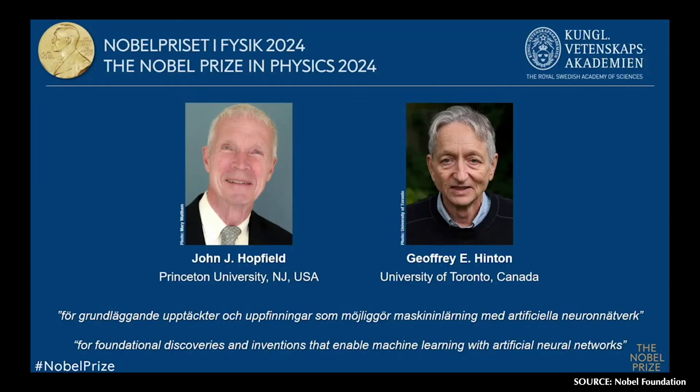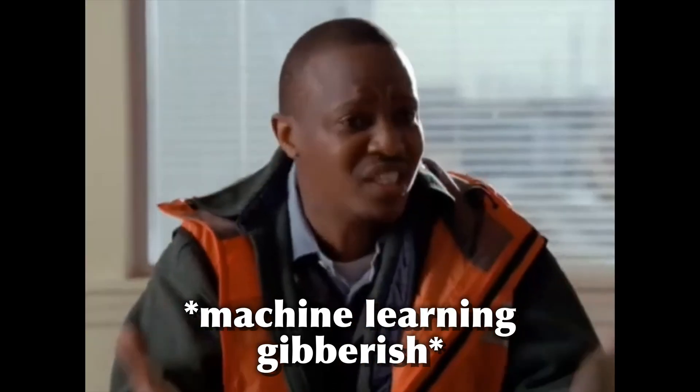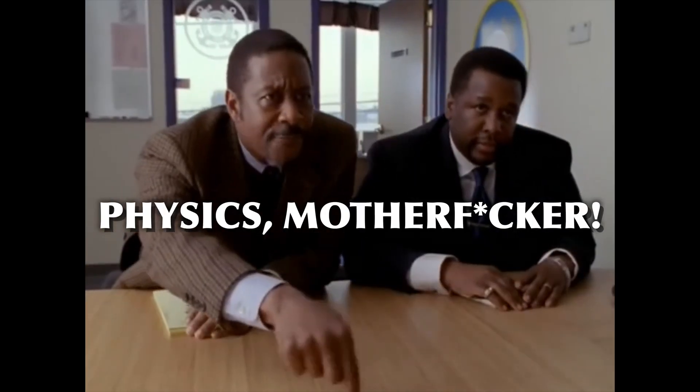The 2024 Nobel Prize in Physics was awarded to John Hopfield and Jeffrey Hinton for their contributions to artificial neural networks, enabling machine learning and the recent breakthroughs in AI. Like most observers, I was very surprised by this choice — not because I feel it's undeserving, but because it's categorized as physics. So let's look into artificial neural networks and figure out how much physics is really in there.